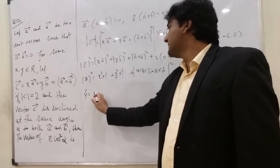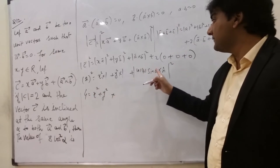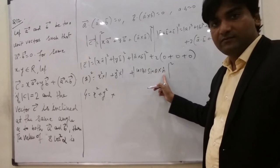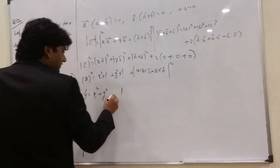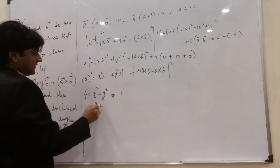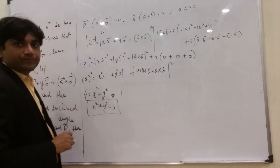So from here, this is 4. This is x square, this is y square. 1 times 1 times sin 90 is 1 and n cap magnitude will be also 1, so this is 1. So what we got? We got x square plus y square equal to 3. We got this relation.